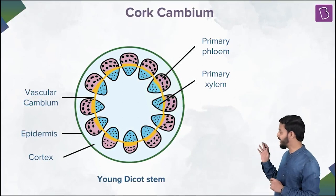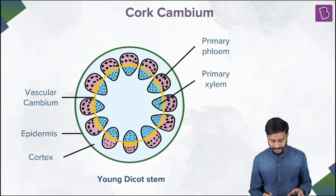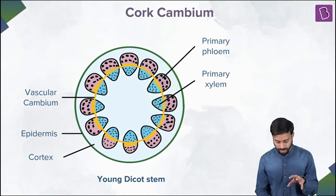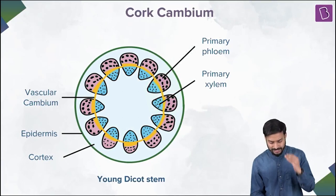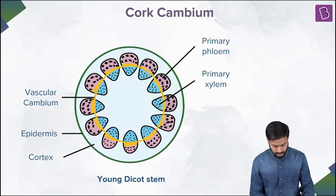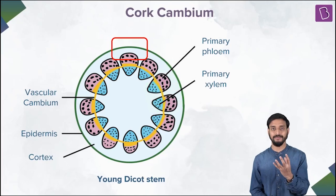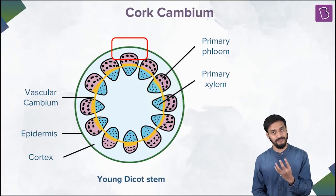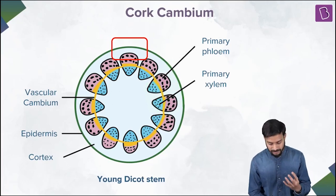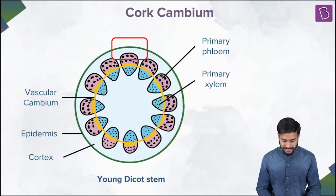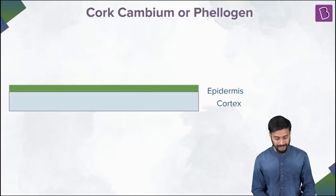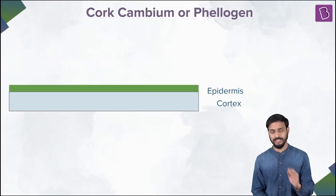What you're seeing on the screen is basically a young dicot stem. As secondary growth occurs due to the vascular cambium, the epidermis starts breaking. The epidermis starts breaking and it is replaced by a new layer.